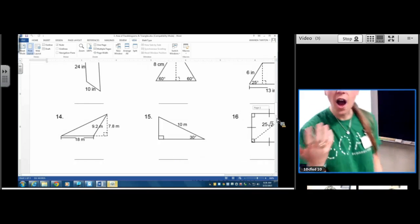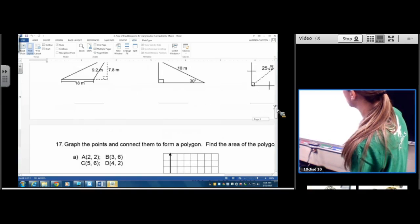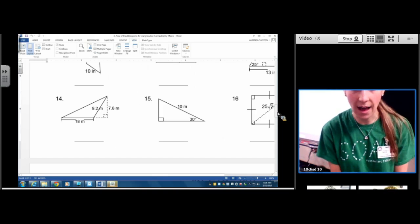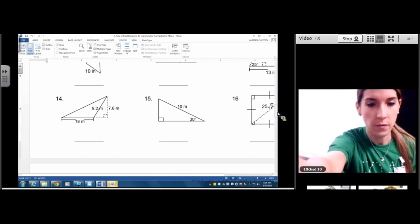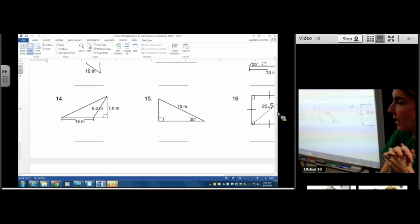So we have an obtuse triangle. And when you have an obtuse triangle, your height is going to fall outside the triangle. So number 14, we just do base times height divided by 2.